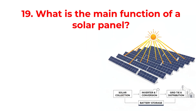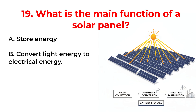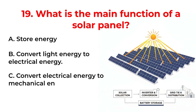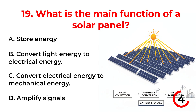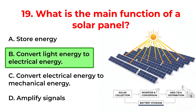What is the main function of a solar panel? A. Store energy. B. Convert light energy to electrical energy. C. Convert electrical energy to mechanical energy. D. Amplify signals. Correct answer is option B. Convert light energy to electrical energy.